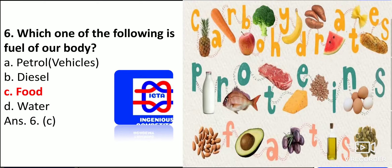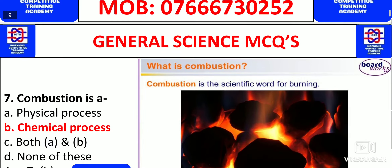Which one of the following is the fuel of our body? We take in food as our chemical fuel. The process of conversion of light energy to chemical energy is photosynthesis. Food — including carbohydrates, proteins, and fats — is essential for our human body and helps in mechanical work.